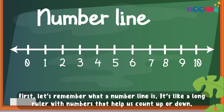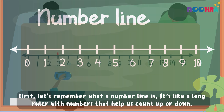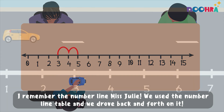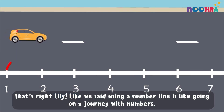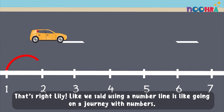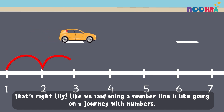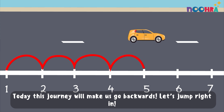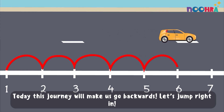First, let's remember what a number line is — it's like a long ruler with numbers that help us count up or down. I remember the number line, Miss Julie! We used the number line table and we drove back and forth on it. That's right, Lily! Using a number line is like going on a journey through numbers. Today this journey will make us go backwards.